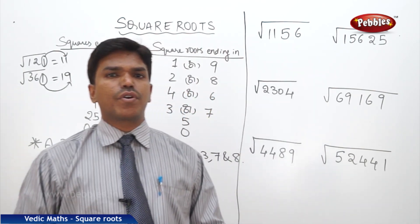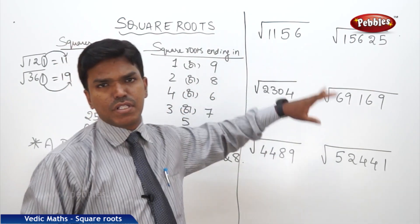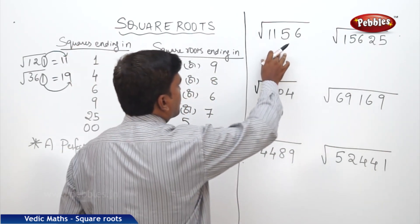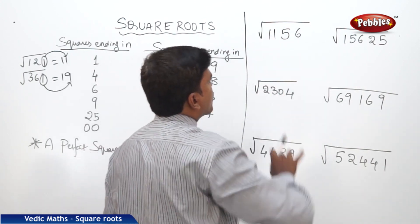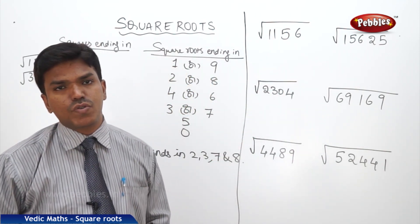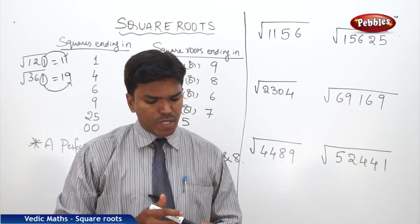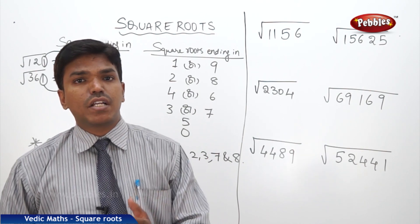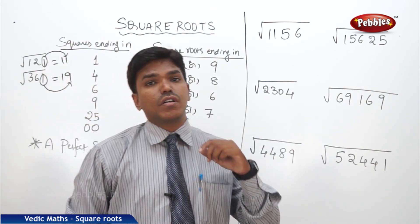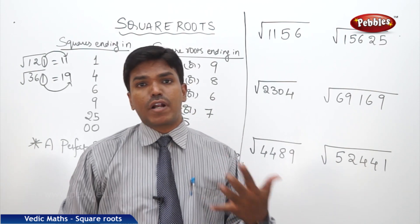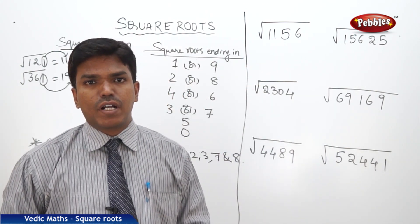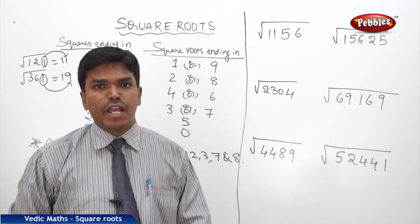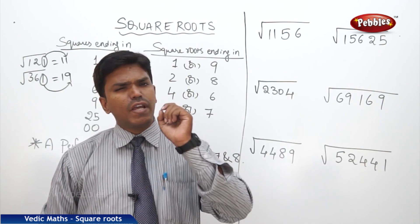Now we will discuss how to find out the square root of a number, taking some examples. To find the square root of a triple digit number is very easy because it comes under 30 squares. But to find out the square root of a 4-digit or 5-digit number, which is beyond 30 squares, it will be a little difficult. Here we are going to find out the square roots of 4-digit or 5-digit numbers in very easy ways.